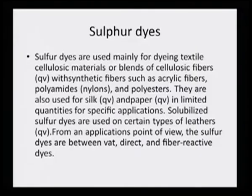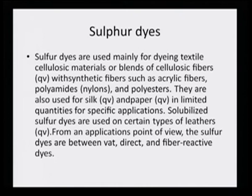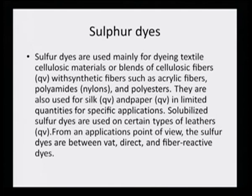The structure of the dye must be compatible with the structure of the fiber or fabric. Sulphur dyes are used mainly for dyeing cellulosic materials or blends of cellulosic fibers with synthetic fibers such as acrylic, polyamide, or polyester. They are also used for silk and paper in limited quantities, and solubilized sulphur dyes are used on certain types of leather.